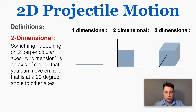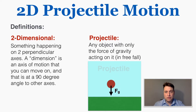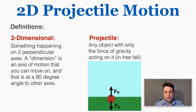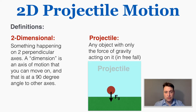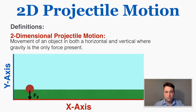It's also possible for motion to happen in three dimensions, which we'll talk about in future units, but for now we want to focus on two-dimensional motion specifically. A projectile is any object with only the force of gravity acting on it in free fall. As long as this object is in the air and the only force acting on it is gravity, it's a projectile. So two-dimensional projectile motion means movement of an object in both a horizontal and vertical direction where gravity is the only force present.